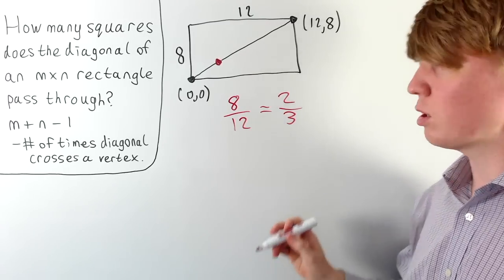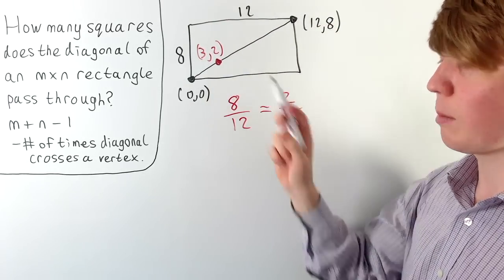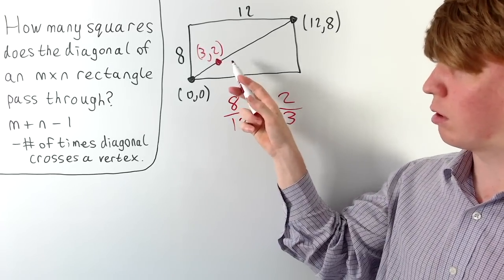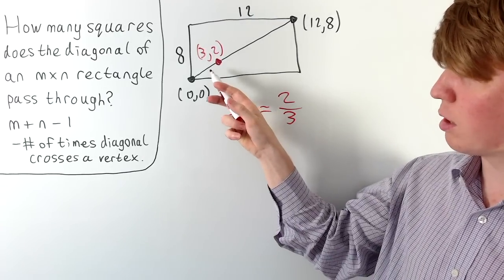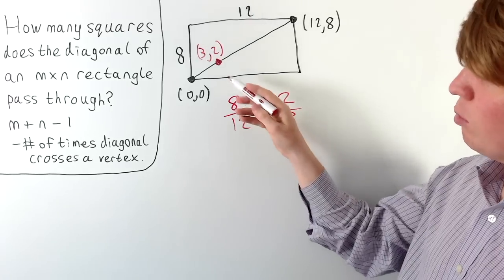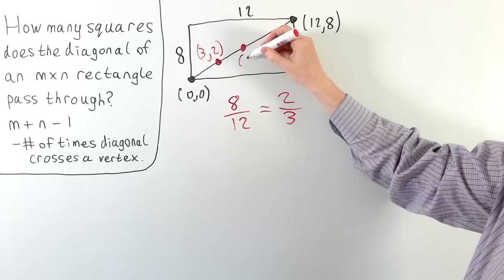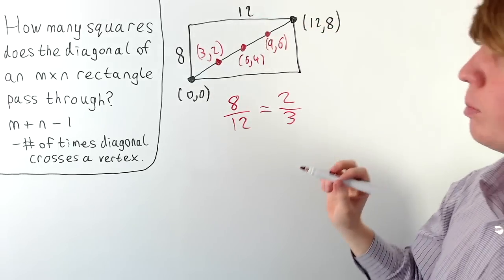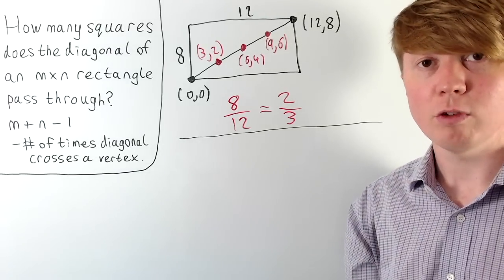The first grid point the diagonal passes through has coordinates (3, 2) — going along 3 and up 2 gives the same gradient of 2/3. This is the first interior grid point because the fraction is fully simplified; if the diagonal passed through a point sooner, we could simplify the fraction further. From (3, 2) we increment by 3 across and 2 up to find the remaining points: (6, 4) and (9, 6), giving a total of three interior grid points.